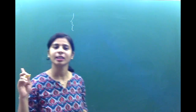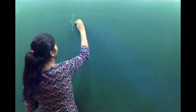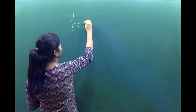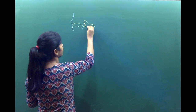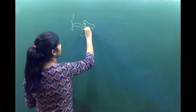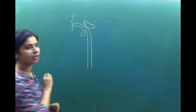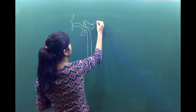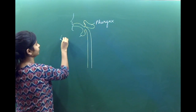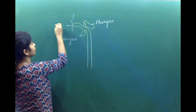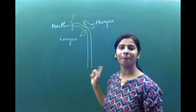We start with a nose for the respiratory digestive system. Mouth — okay. The mouth is common in the respiratory as well as the excretory system. Here is a larynx.